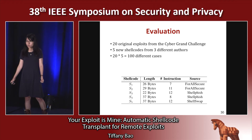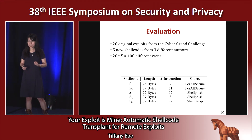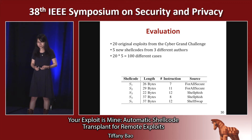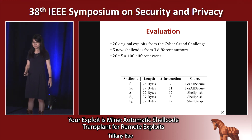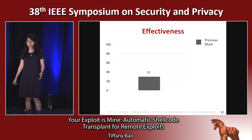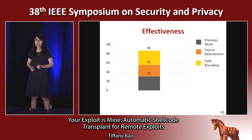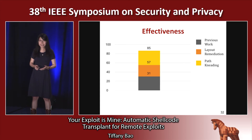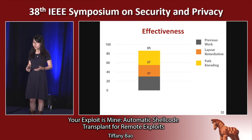To evaluate our work, we used 20 original exploits from the Cyber Grand Challenge. Meanwhile, we have five pieces of new shellcode of different lengths, different numbers of instructions, and created by different authors. In total, we have 20 times 5, which equals 100 different cases. We found that while previous work is able to generate 31 exploits, ShellSwap generated 85 exploits — among which 57 exploits are generated by layout remediation, and 28 more exploits are generated by path knitting. Our evaluation showed that ShellSwap can generate two times more exploits than previous work, and both layout remediation and path knitting are necessary.